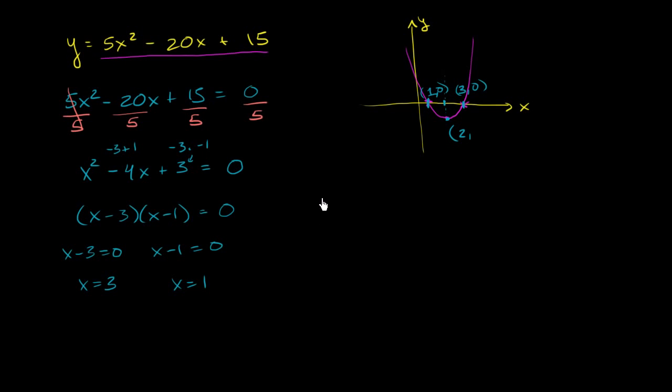When x equals 2, y is going to be equal to 5 times 2 squared minus 20 times 2 plus 15, which is equal to, let's see, this is equal to 2 squared is 4. This is 20 minus 40 plus 15. So this is going to be negative 20 plus 15, which is equal to negative 5.